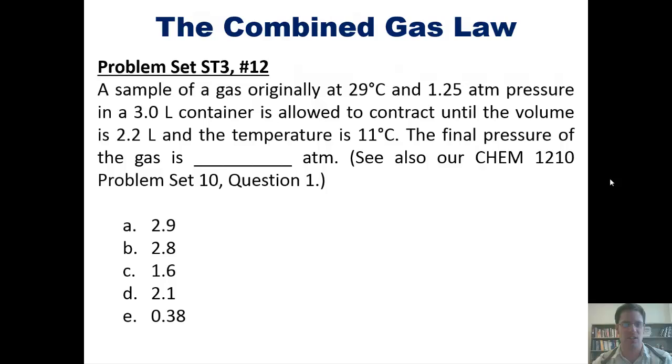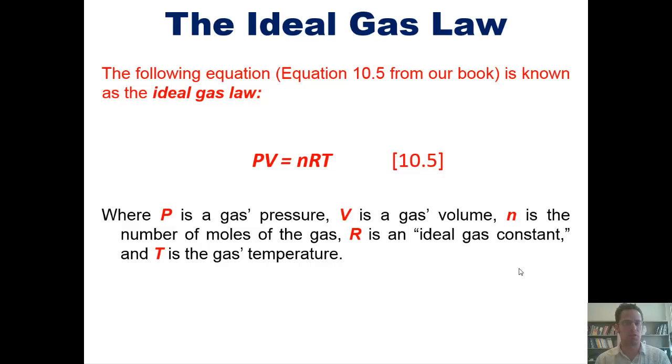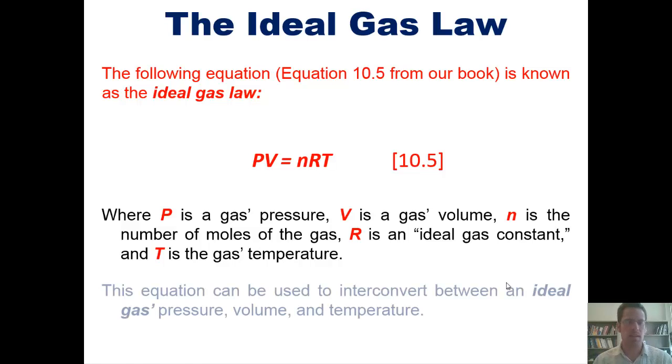Now we move on to the ideal gas law. The following equation is known as the ideal gas law, where P is a gas's pressure, V is its volume, n is the number of moles of the gas, and R is something called the ideal gas constant, and T is the gas's temperature. This equation can be used to interconvert between any ideal gas's pressure, volume, and temperature.